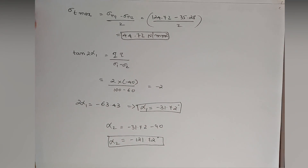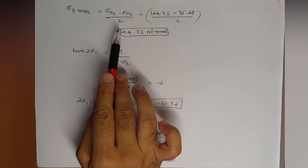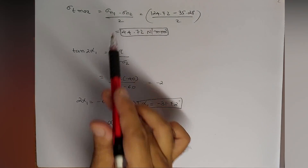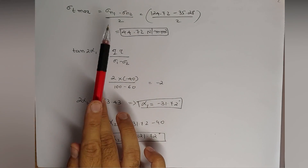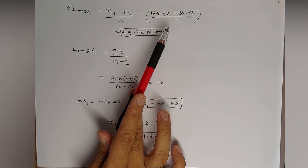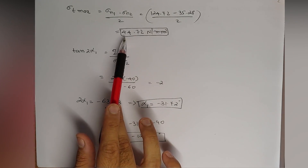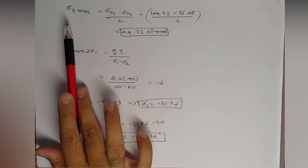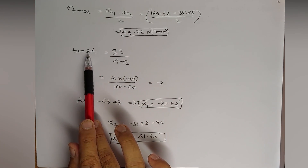The maximum shear stress is given by σt_max = (σn1 − σn2) / 2. With sigma n1 = 124.72 and sigma n2 = 35.28, sigma t max = 44.72 Newton per mm square. Then, tan(2α1) = 2τ / (σ1 − σ2), which we proceed to solve.